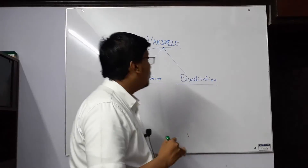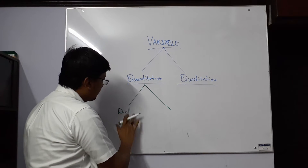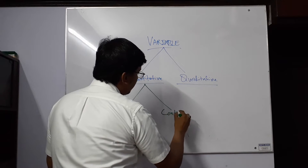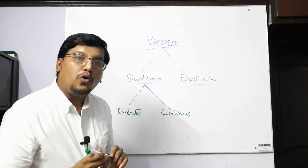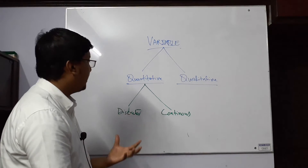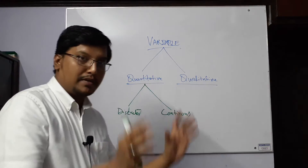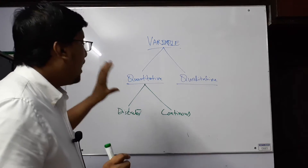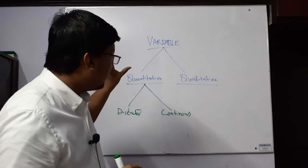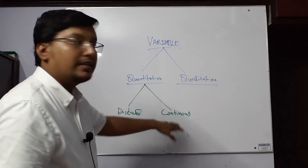The quantitative variable is further divided into two important types: discrete and continuous. Discrete variables can be expressed in whole numbers — in the shape of integers, complete numbers. Those variables expressed in the shape of fractional values, or within specific intervals, are called the continuous variables. It is very clear that both types belong to the quantitative variable.